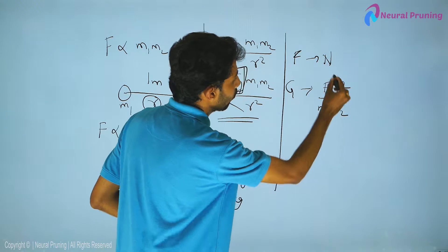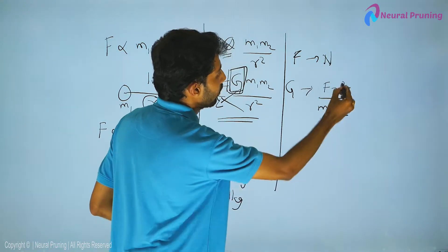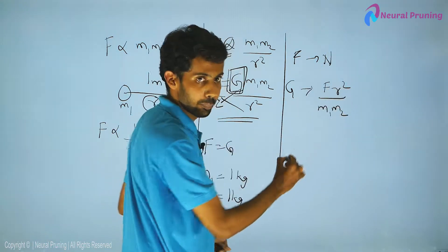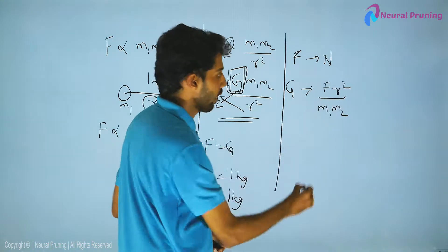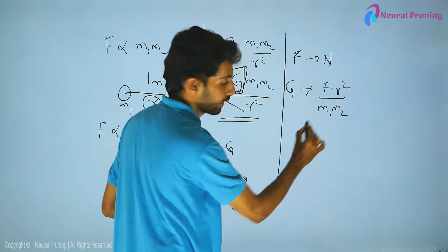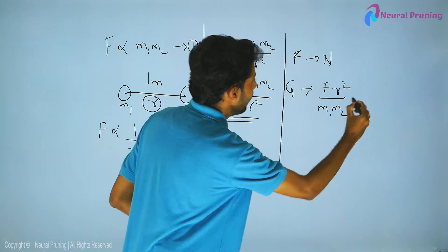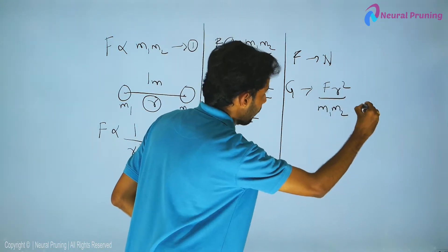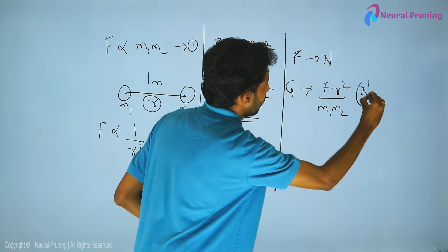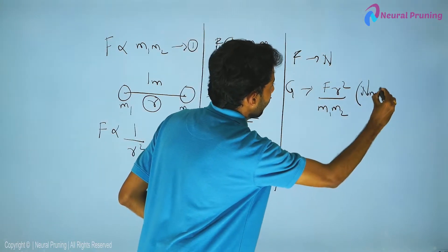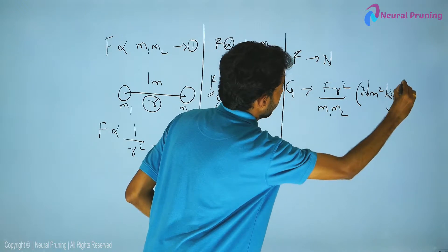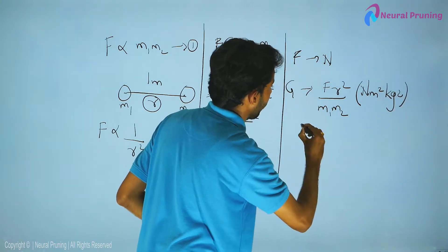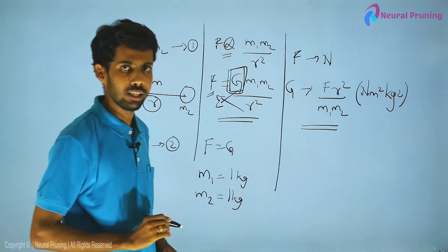To confirm: the unit of force is Newton, unit of distance is meter, so distance squared is meter². With m₁ and m₂ both in kilograms, the unit of G works out to Newton·meter² per kilogram², which is the unit of the universal gravitational constant.